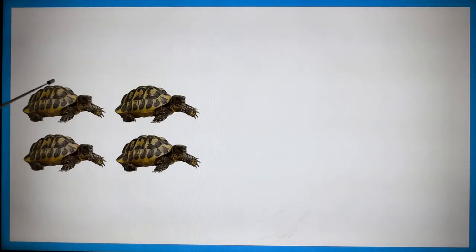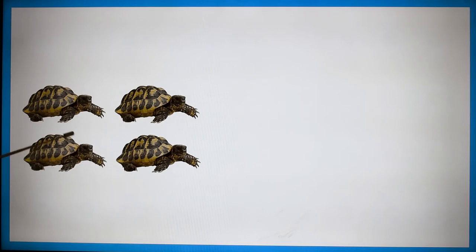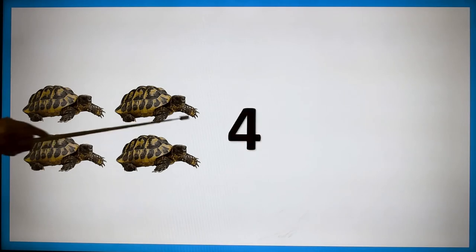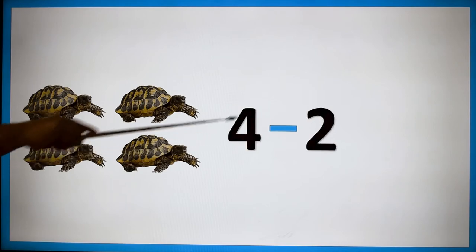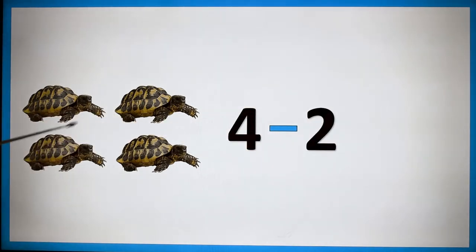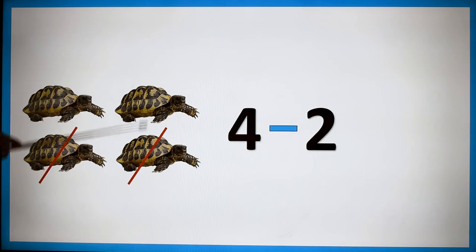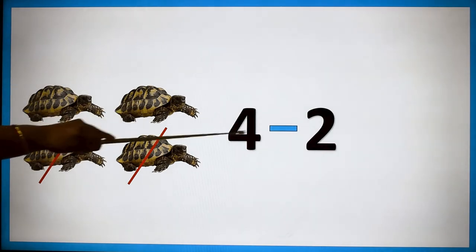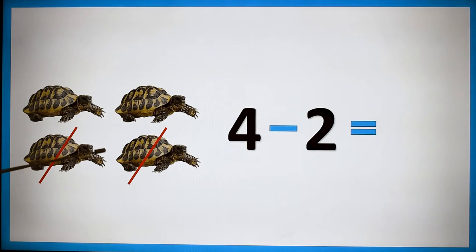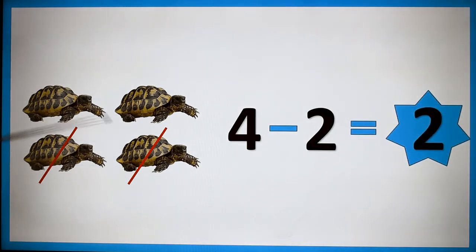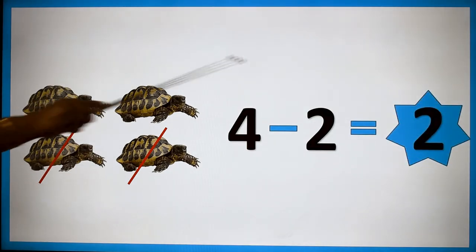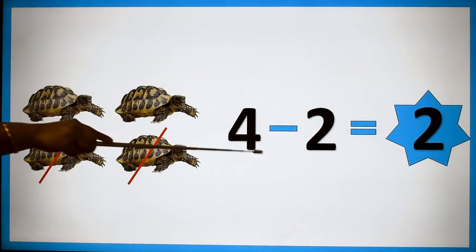How many tortoises are there in this? 1, 2, 3, 4 — four tortoises. Four minus two. Now I am going to cancel two tortoises from this: 1, 2. In four tortoises I cancel two. How many tortoises are left over? 1, 2. So four minus two is equal to two.